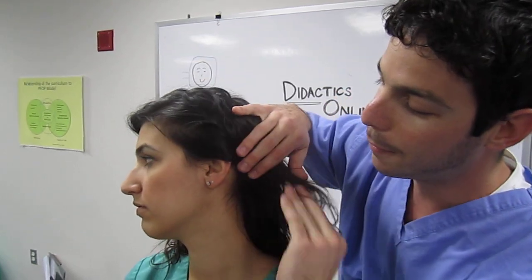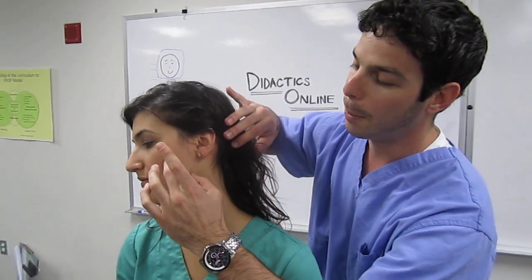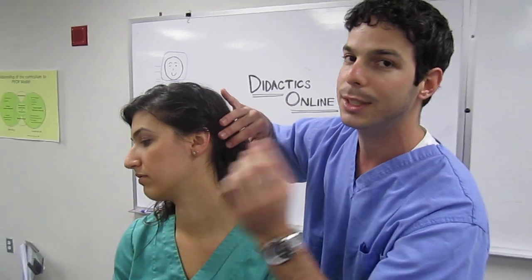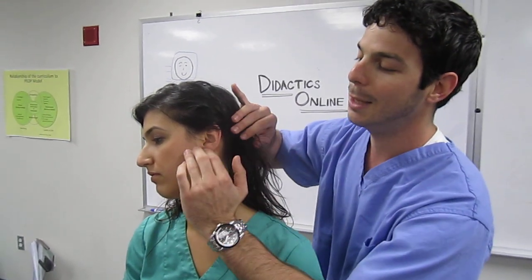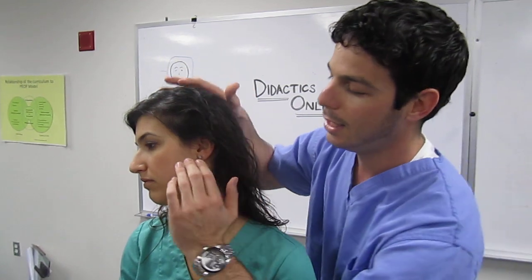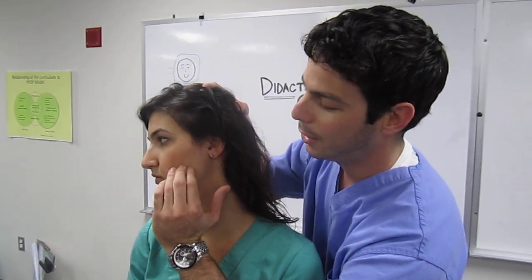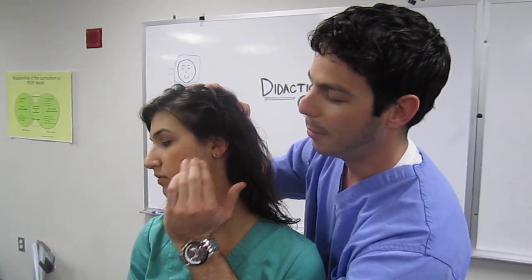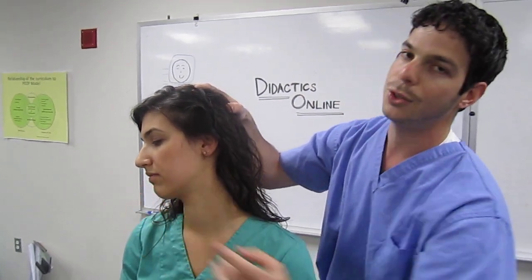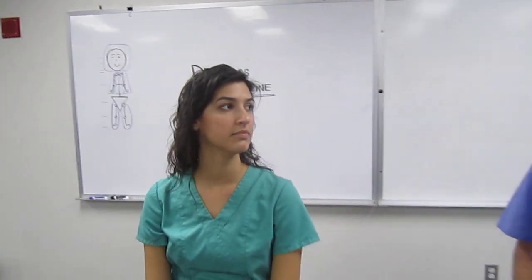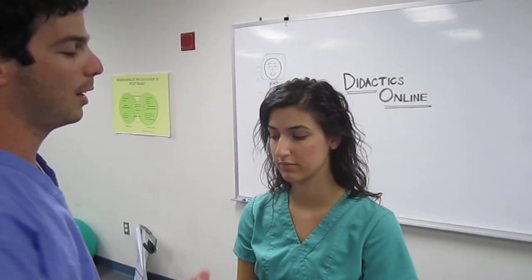Now that we've freed that pre- and post-auricular area up, we want to bring that fluid down towards the mandible. This is the mandibular raking, also known as Galbreath's technique — just like it sounds: raking down the mandible. We've freed it up here and moved it down towards the chin, and now we'll come in front of the patient to do some mandibular work.